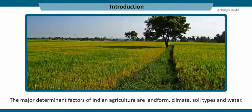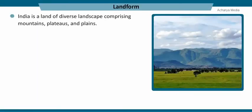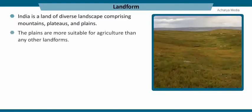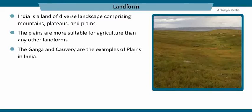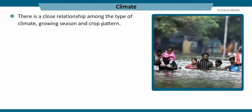The availability of water is the most important factor controlling agriculture. India is a land of diverse landscape comprising mountains, plateaus, and plains. The plains are more suitable for agriculture than any other landforms. The alluvial soils found in plains are rich, which enhances agricultural productivity. The Ganga and Kaveri are examples of plains in India.